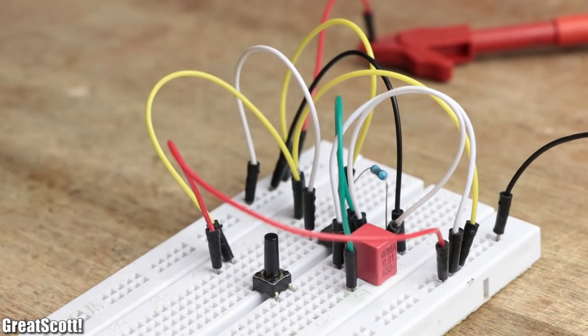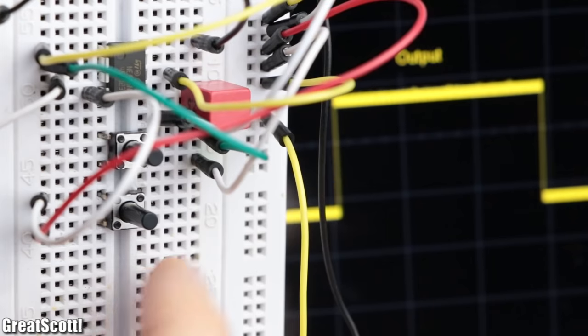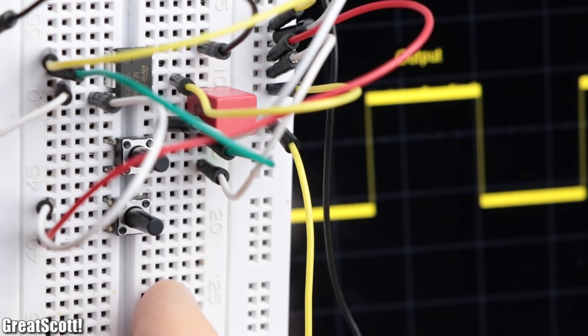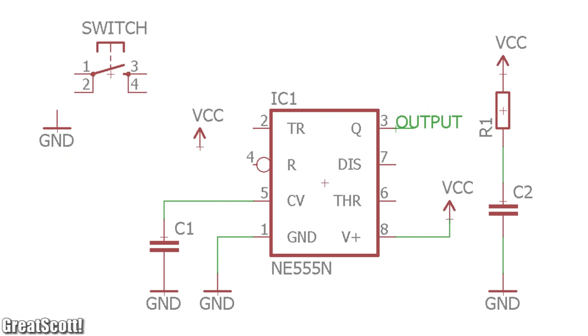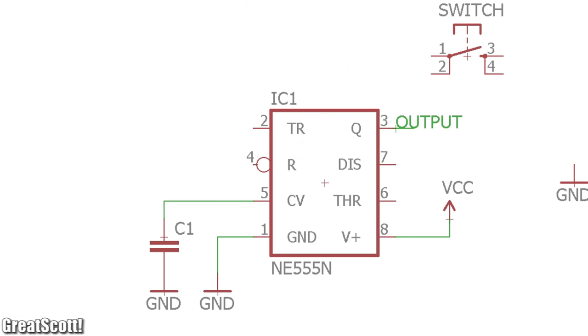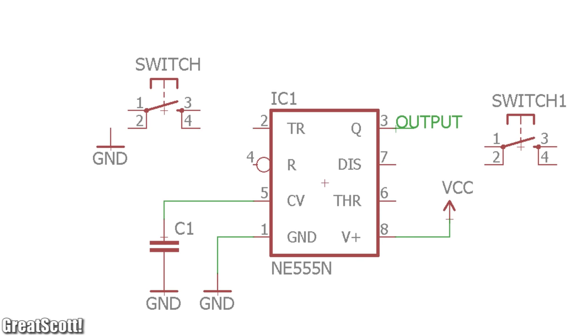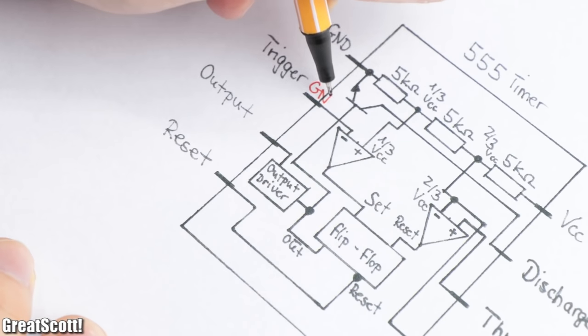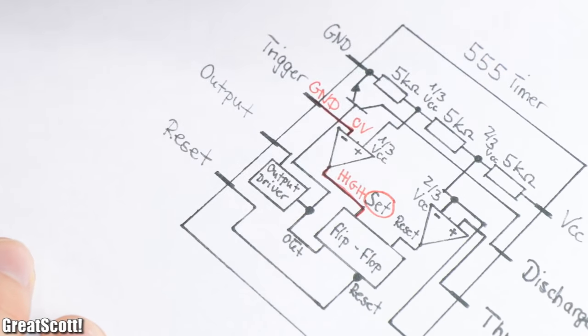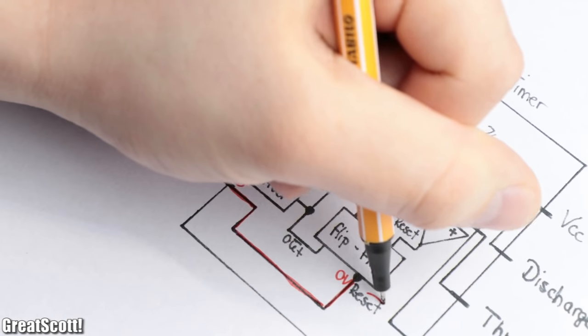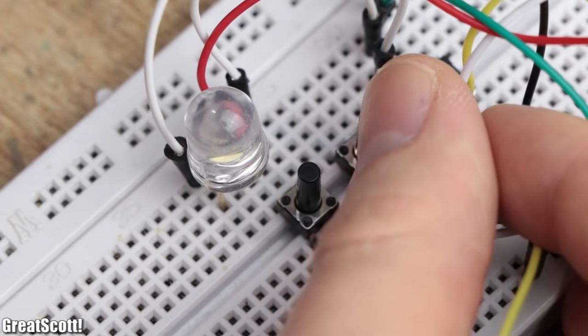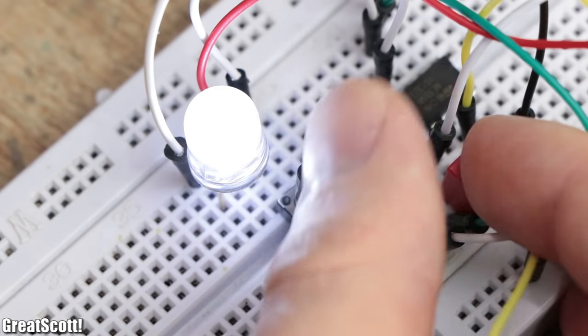The next basic circuit is the bistable multivibrator, which can as the name already suggests create two stable output states, high and low. The circuit does not require any RC components and only utilizes the trigger pin 2 as the set pin and the reset pin 4 as obviously the reset pin. This way by applying a ground potential to either one of them, the integrated flip-flop is either activated or deactivated, and thus creates two stable states. Perfect for turning your LED on and off manually with push buttons.